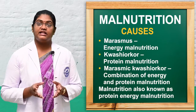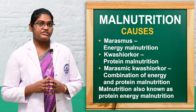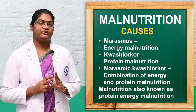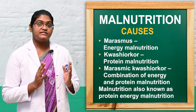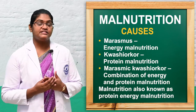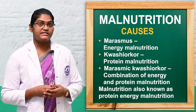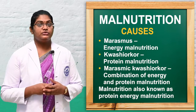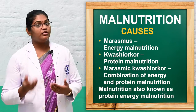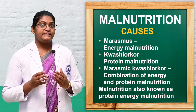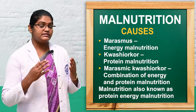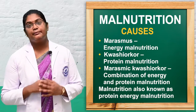There are three main clinical forms of malnutrition. The first is marasmus, the second is kwashiorkor, and the third is marasmus-kwashiorkor. Marasmus is due to energy malnutrition, kwashiorkor is protein malnutrition, and marasmus-kwashiorkor is a combination, also known as protein energy malnutrition.